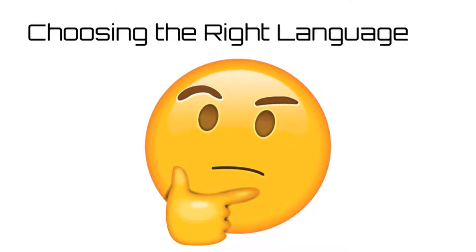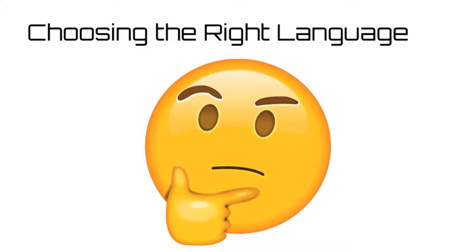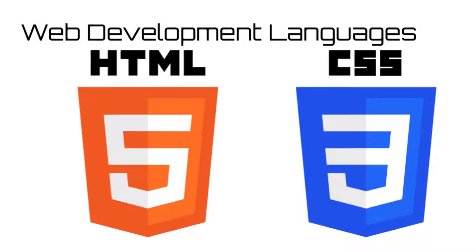This has led to the creation of thousands of different programming languages, each designed for a specific task. For example, if you are trying to design a website and delve into that career path, using HTML and CSS is probably your best bet. HTML is a markup language that is designed for writing the content of a website, while CSS is great for designing the style of the website.